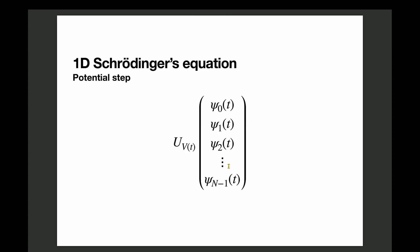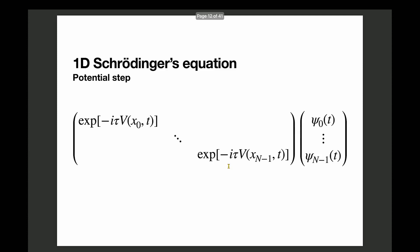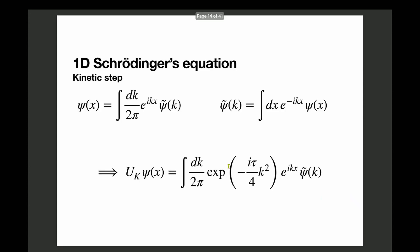The potential term is very easy to handle because we can discretize it the same way as the wave function. We express the wave function as a vector, and the potential term as a diagonal matrix where each diagonal entry corresponds to the potential evaluated at a given grid point — x0, x1, and so on to xN-2. This operation of uV times the psi vector takes order N operations, so it's a very light computation.